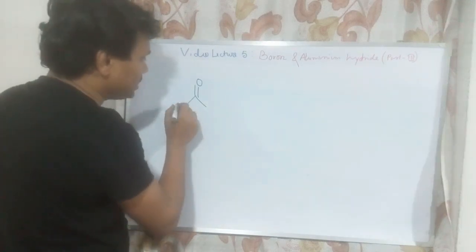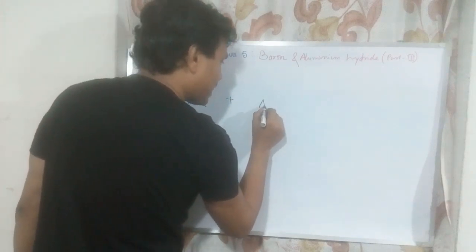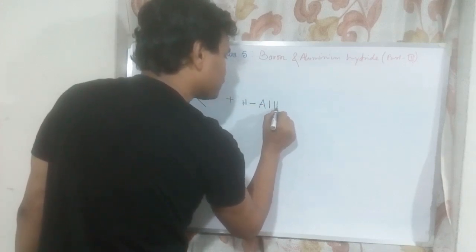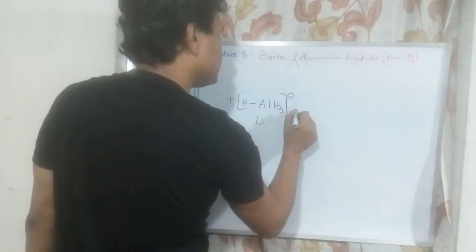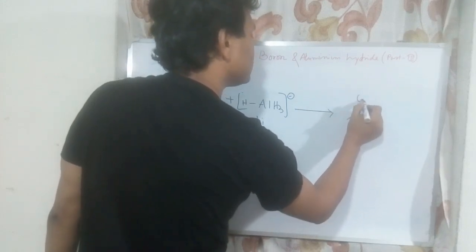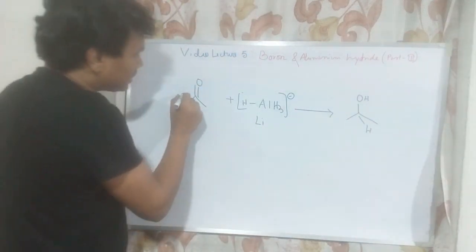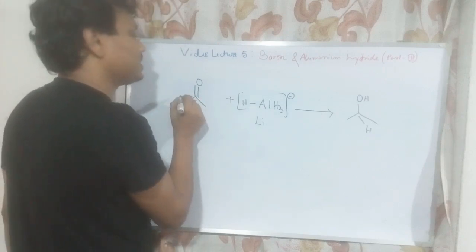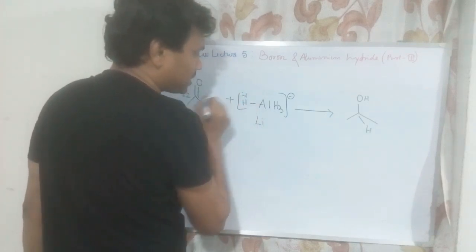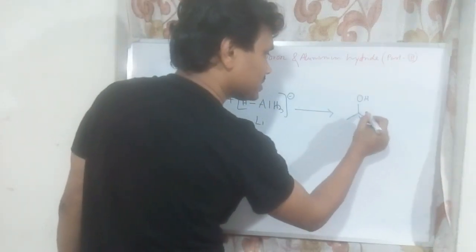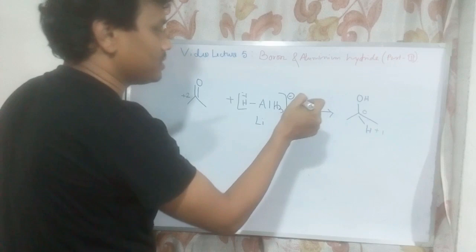For example, let's take acetone as the ketone. AlH4⁻ reacts with acetone, ultimately producing the corresponding alcohol. Since it is a reduction reaction, check where reduction and oxidation are happening. This carbon is in a +2 oxidation state; this hydrogen is in a −1 oxidation state, and ultimately this carbon goes to +1, and the hydrogen to 0 oxidation state. So the reduction is happening on the carbon centre — that is why this is called a reduction reaction.